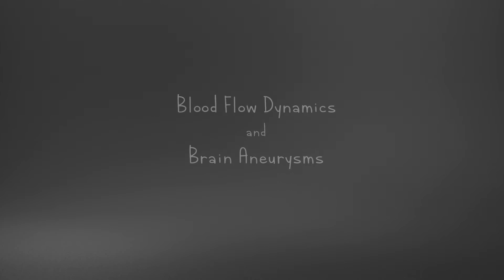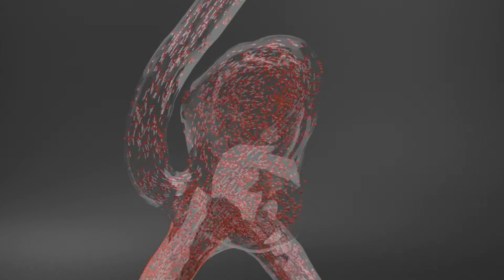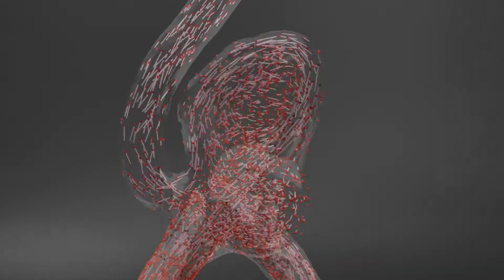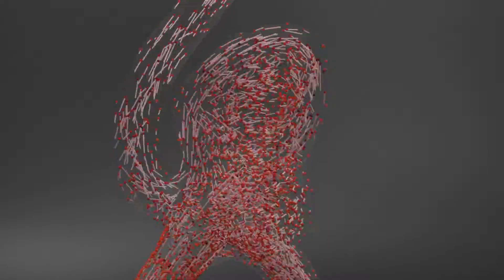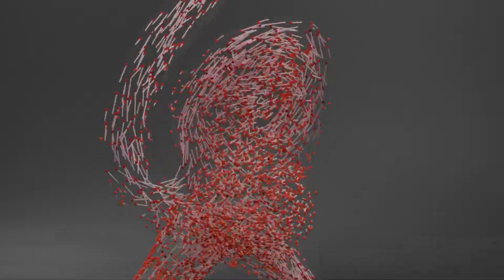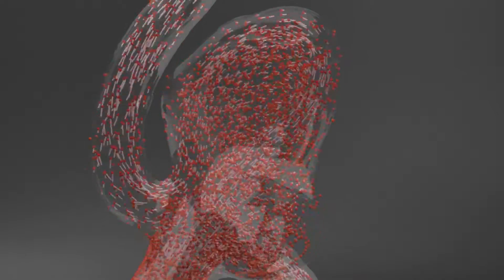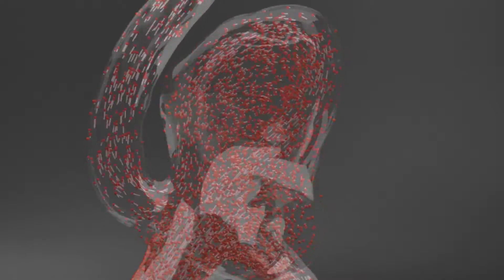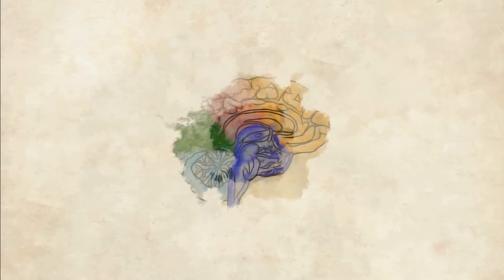Blood flow isn't something we really feel or control, as important as it is. But understanding how blood moves in the brain may help us understand why brain aneurysms develop and why they rupture.